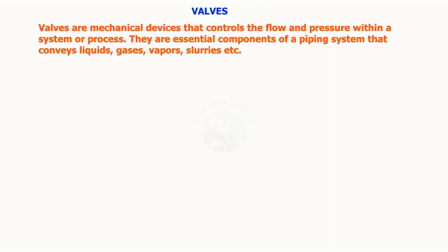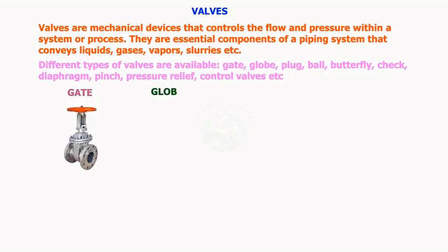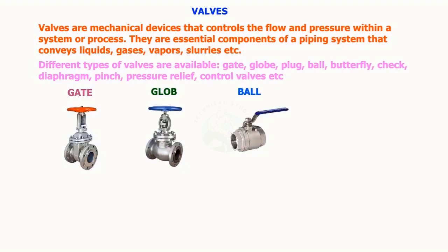Valves are mechanical devices that control the flow and pressure within a system or process. They are essential components of a piping system that conveys liquids, gases, vapors, slurries, etc. Different types of valves are available: gate, globe, plug, ball, butterfly, check, diaphragm, pinch, pressure relief, and control valves are the commonly used valves.